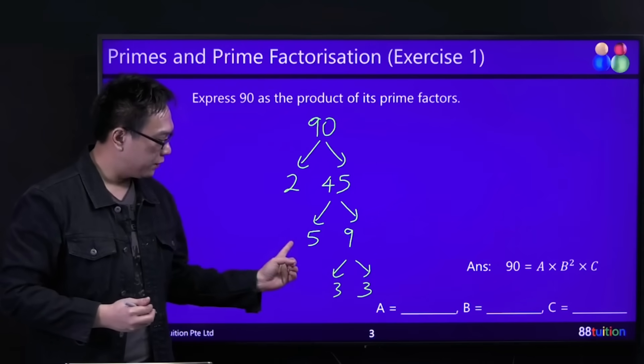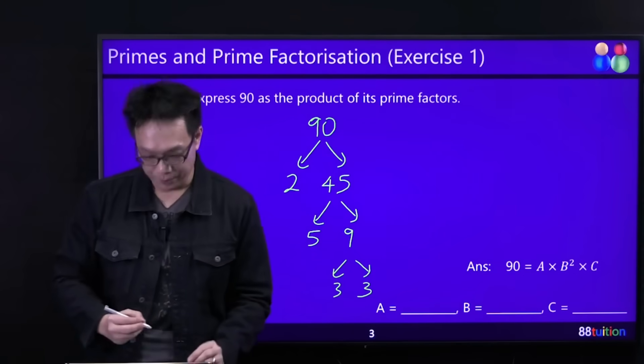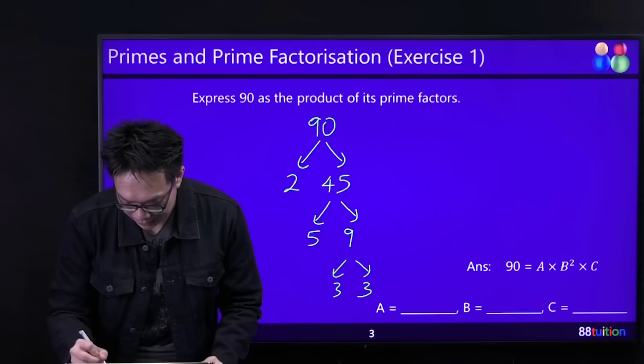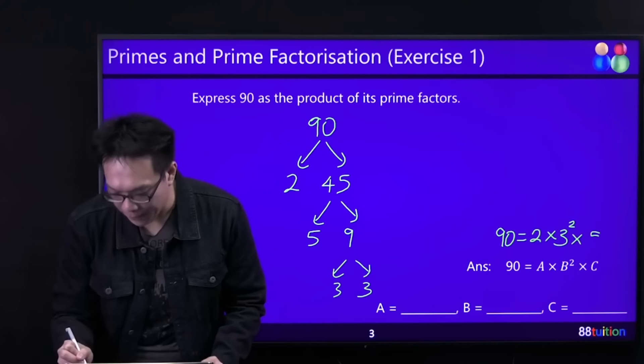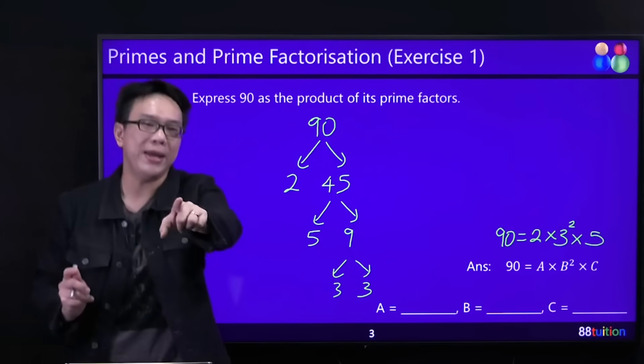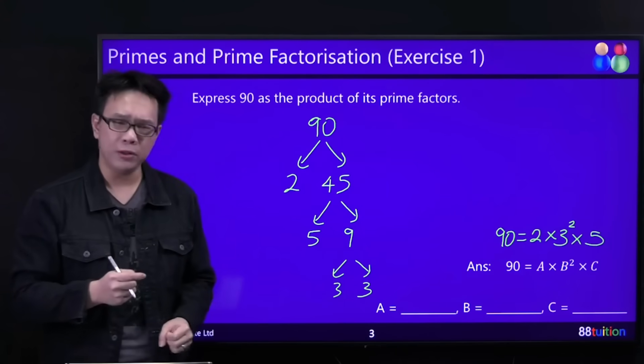So answer: 2 times 5 times 3 times 3. Write it in ascending order, so 90 is equal to 2 times 3 square times 5. What must be in ascending? The base. Wow, you're speaking like me, very good!